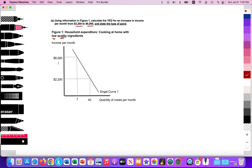So here we see that income is rising, and then we see that spending on the low quality ingredients to generate meals per month is decreasing. So there's a negative relationship here.